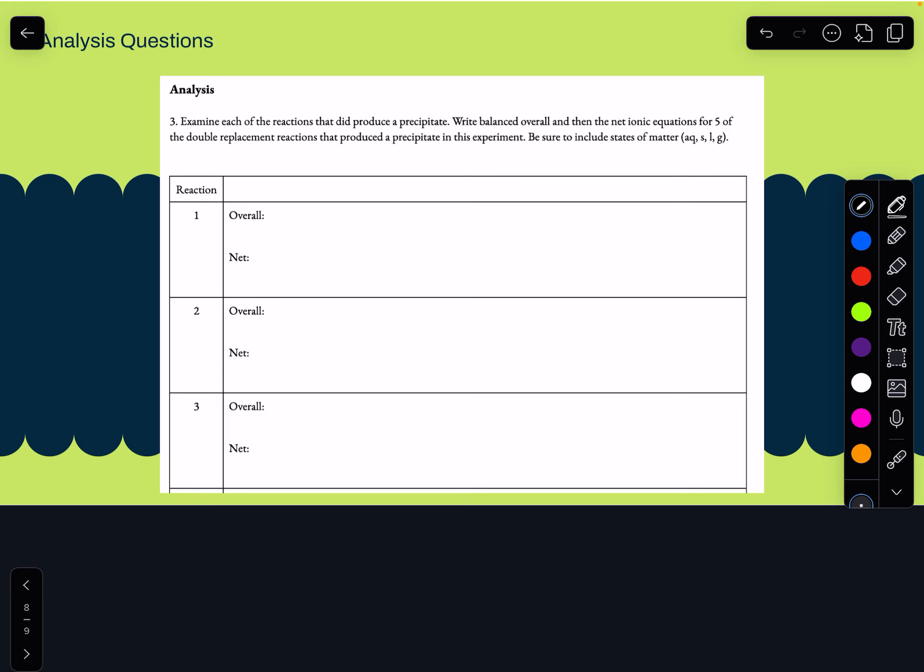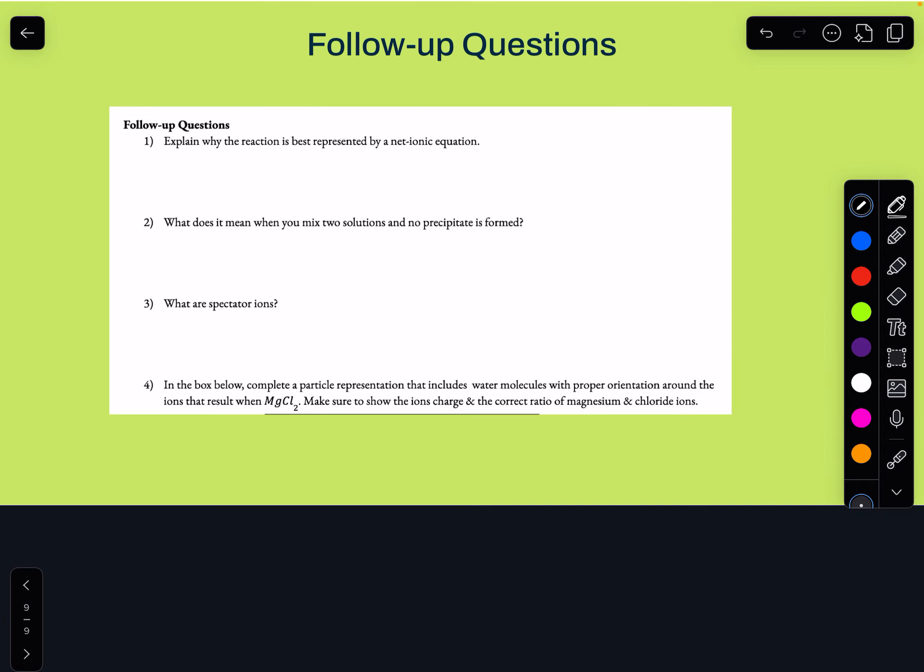Once you do that, then you can go to your analysis questions, which is where you'll just be picking some of the precipitation reactions. So you won't do all of them here, but just some of them for practice of writing the overall and the net ionic reaction. And then finally, just some follow-up questions that focus on the visuals as well as some of the vocabulary of what goes on.